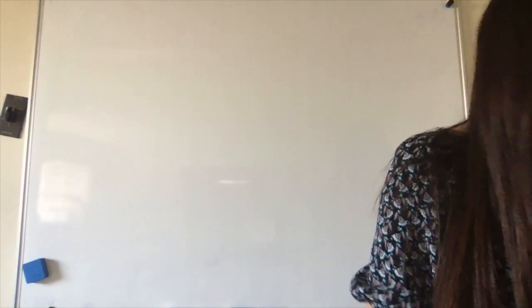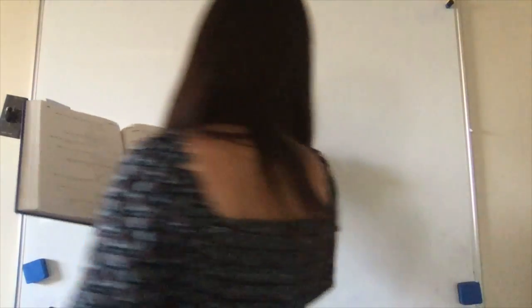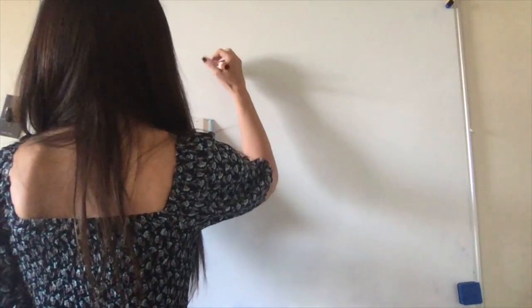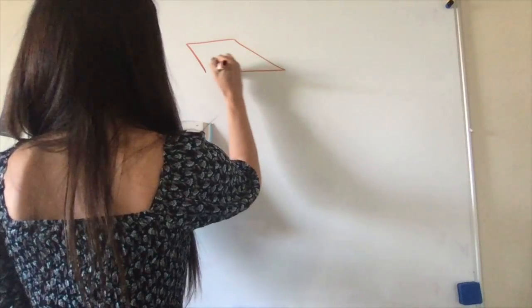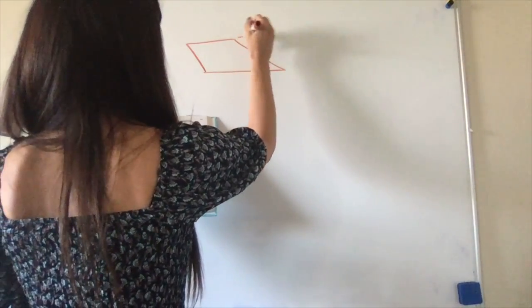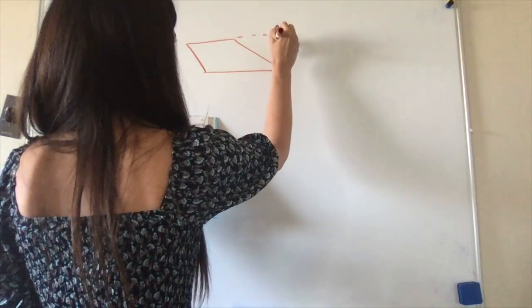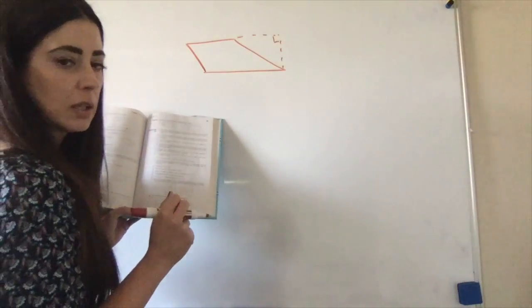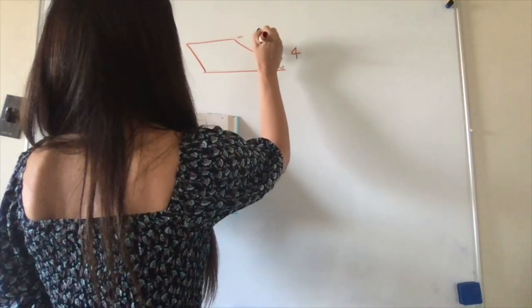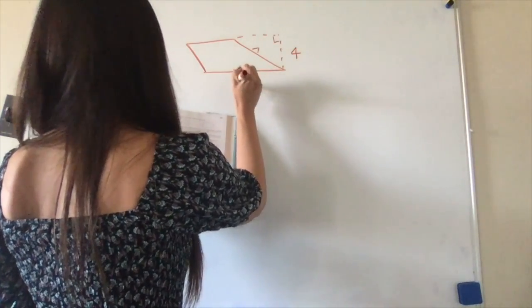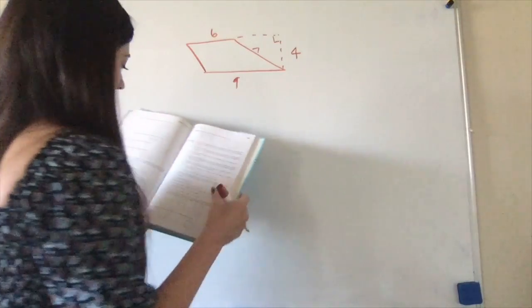So we're going to find the area of this trapezoid, and the dimensions are in feet. It's a really wonky kind of shape, and then they give us the height. Notice they always put the little 90-degree marker in there so that you know it's the height. We have 4, this is 7, 9, and 6.